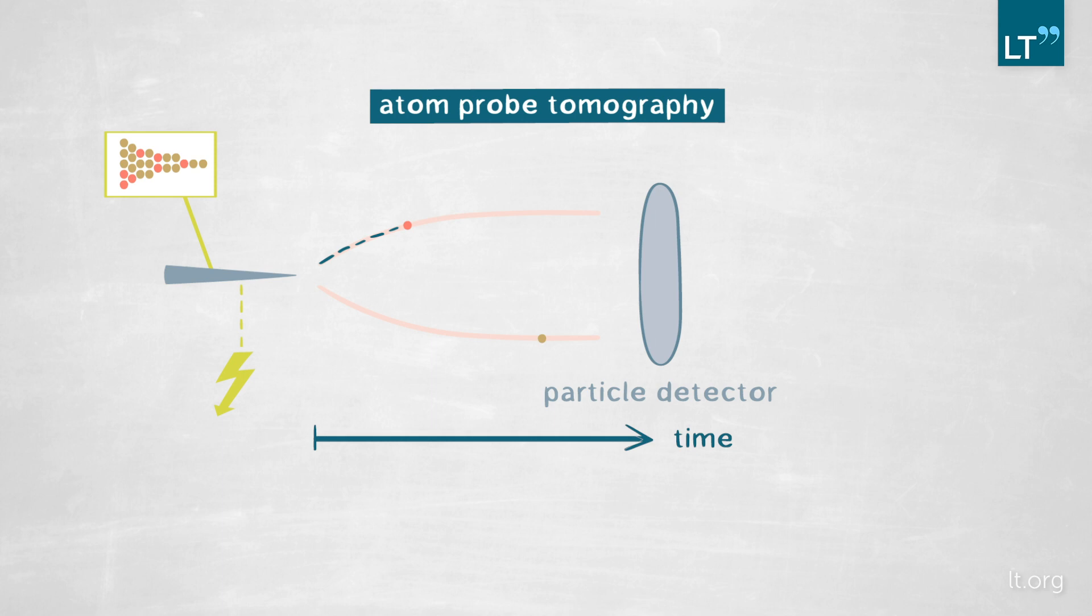It matters because a heavy atom will travel slowly, so it will take it a long time to reach the detector. However, a very light atom, like hydrogen for example, will travel very quickly. So based on the time of flight we can actually determine which is the element that was sitting at that specific position on the specimen.